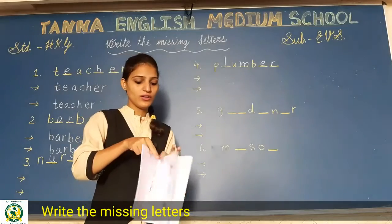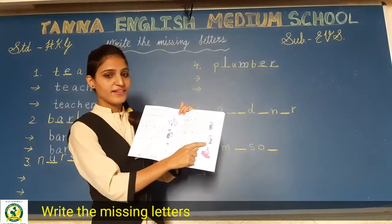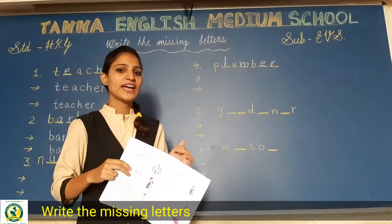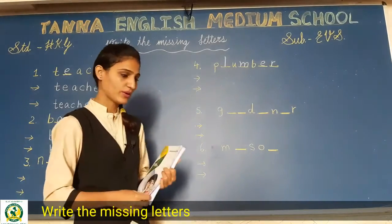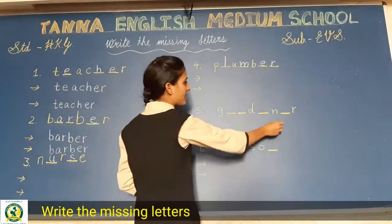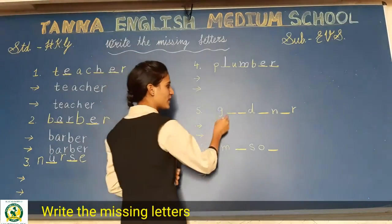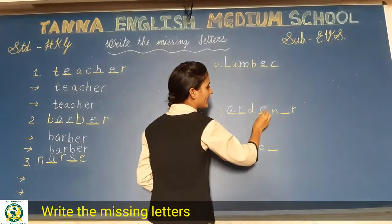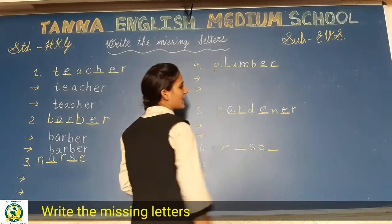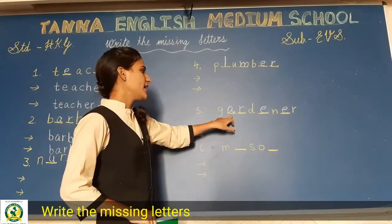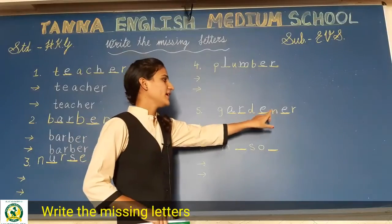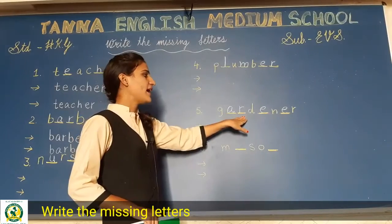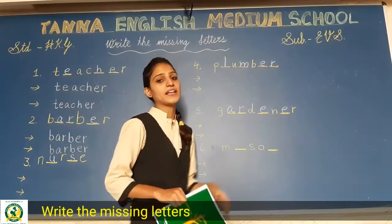Next picture देखो — पानी दे रहा है। Yes, gardener। जो gardener होता है वो flowers और plants को water देता है। आपको gardener का spelling यहाँ लिखना है। G-A-R-D-E-N-E-R, gardener. G-A-R-D-E-N-E-R, gardener.